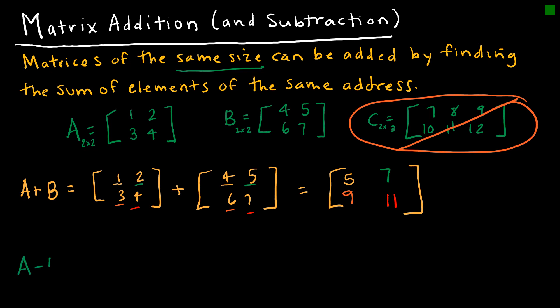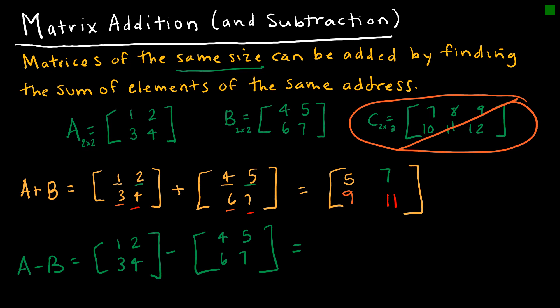Subtraction is very similar. You can straight up subtract, or you can change the minus to a plus and change the sign of everything inside. So: 1+(−4)=−3, 2+(−5)=−3, 3+(−6)=−3, 4+(−7)=−3.